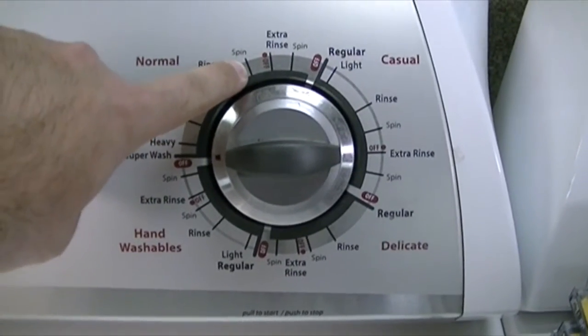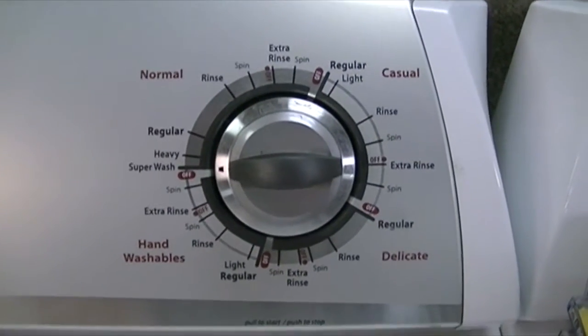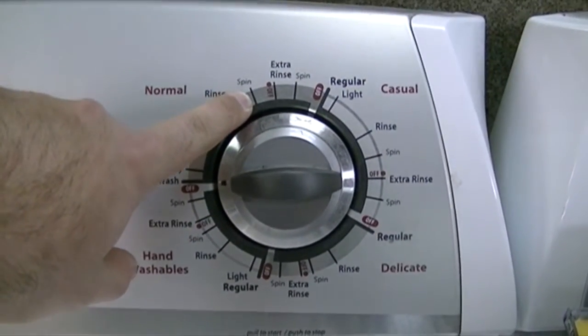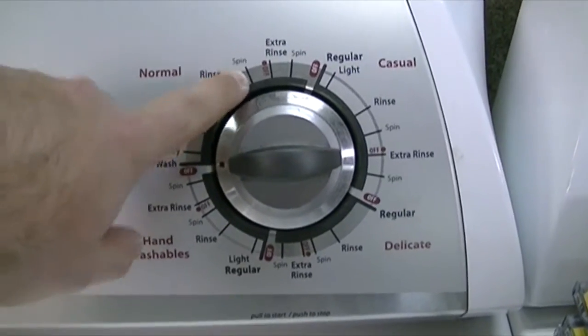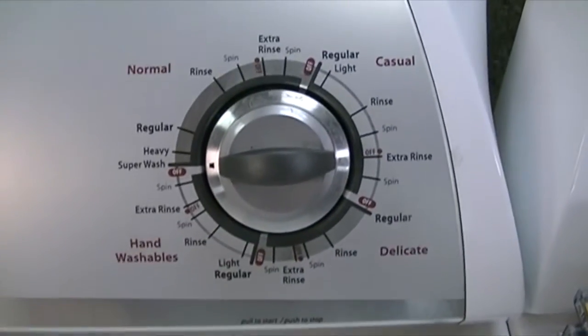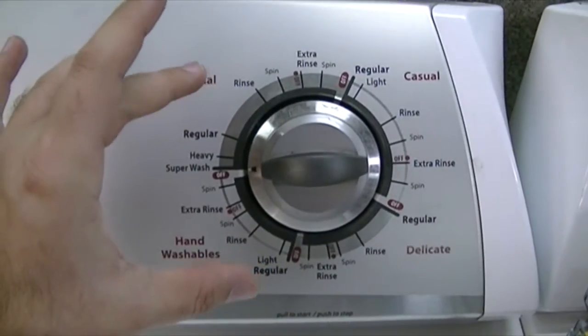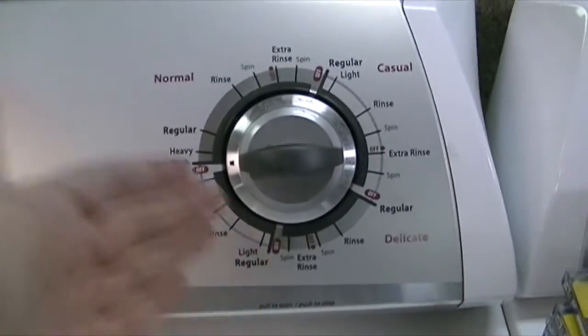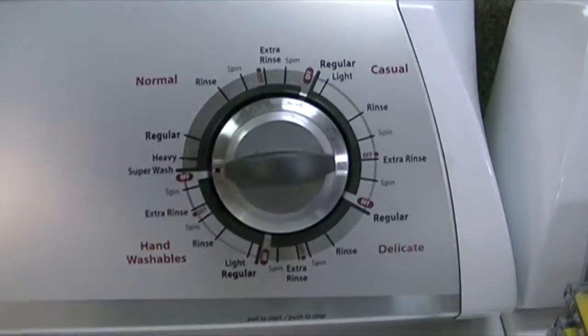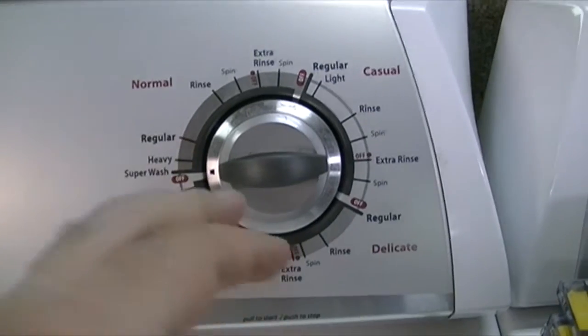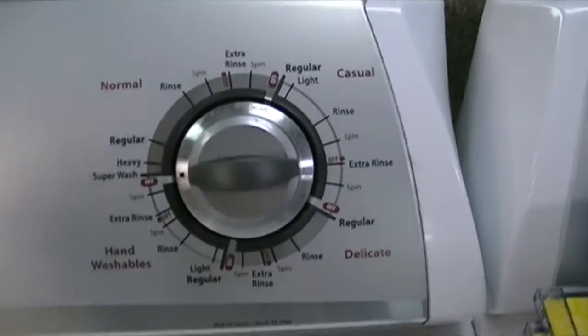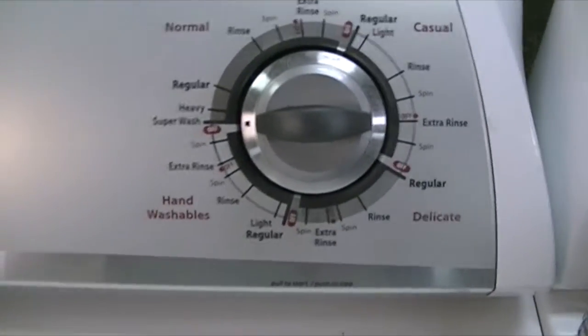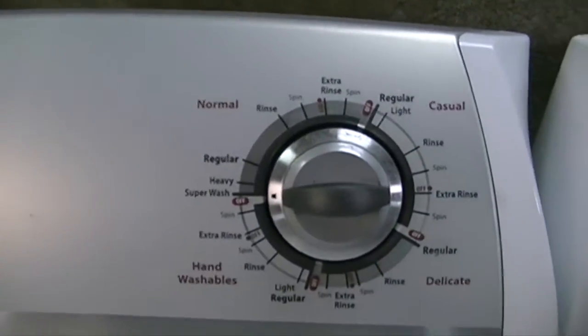So really the spin option here was made with the assumption that the person's going to manually put the timer on spin when that's the last thing the machine actually did. Basically the way it works is the timer, aside from the fill, decides what speed and what direction the motor turns. The timer doesn't really actually decide what the transmission does—the transmission itself kind of does that.